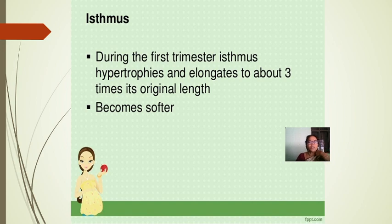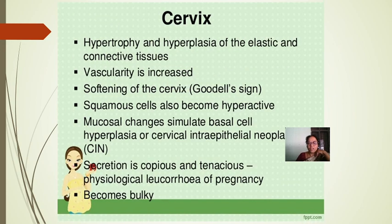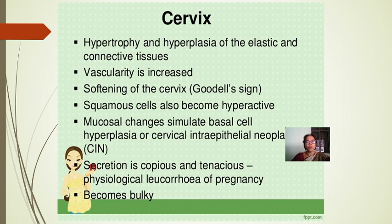Isthmus: during the first trimester the isthmus hypertrophies and elongates to about three times its original length, becoming very soft, which favors delivery at term. Cervix: hypertrophy and hyperplasia of elastic and connective tissues occur, vascularity increases, and softening of the cervix takes place — a good health sign. The squamous cells become hyperactive; mucosal changes stimulate basal cell hyperplasia. Secretion is copious and tenacious — physiological leucorrhoea of pregnancy — and the cervix becomes bulky.